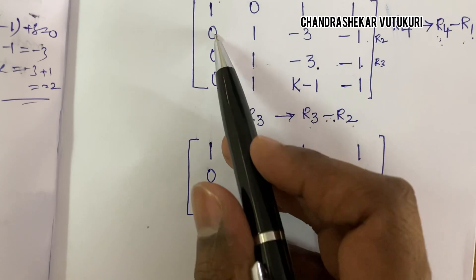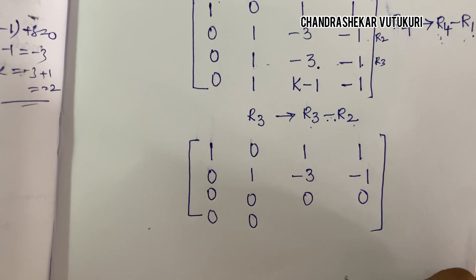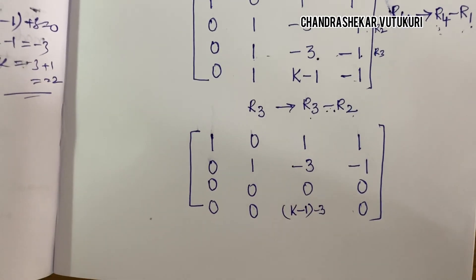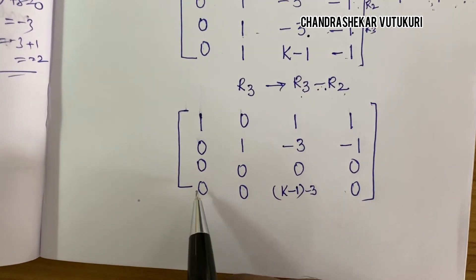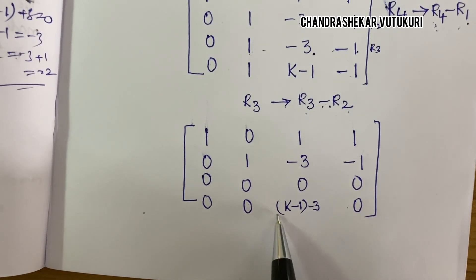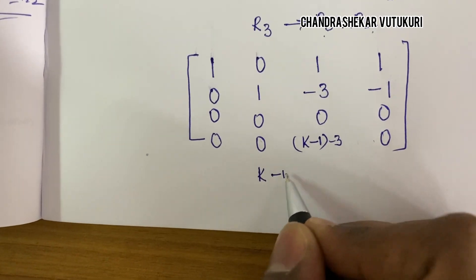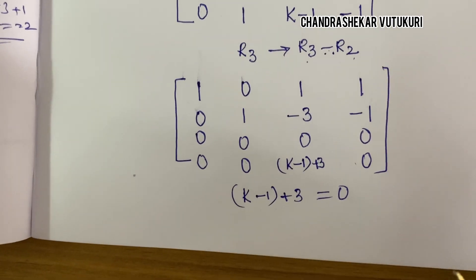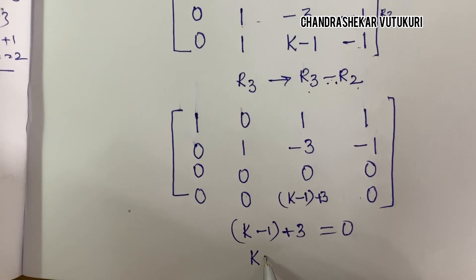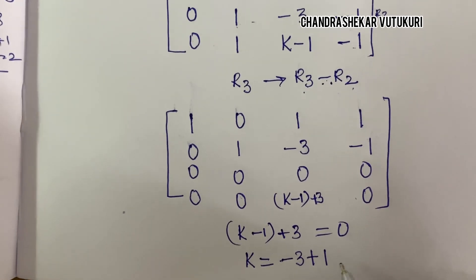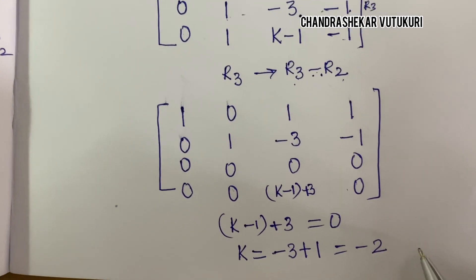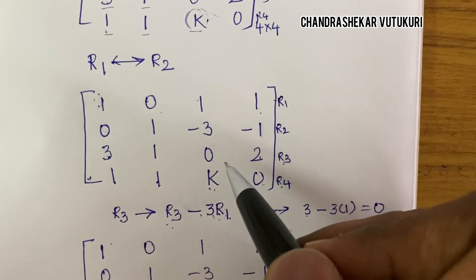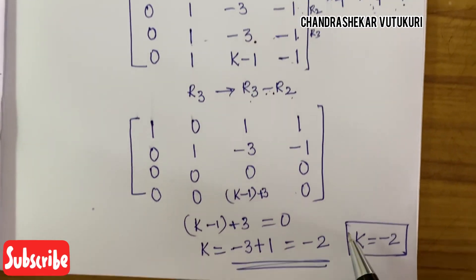Applying the operation to row 4 using row 2: elements become 0, 0 (1−1=0), and K−1−(−3) = K−1+3 = K+2, and −1−(−1) = 0. Since the rank is 2, rows 3 and 4 must both be zero rows. So we set K + 2 = 0 — wait, the expression is K − 1 − (−3) = 0, giving K − 1 + 3 = 0, so K + 2 = 0, meaning K = −2. The value of K is −2.